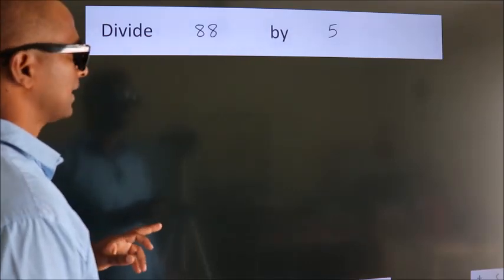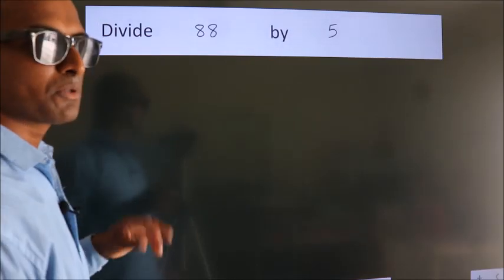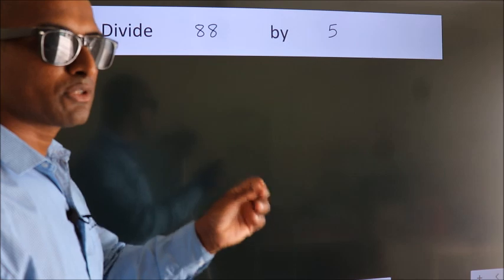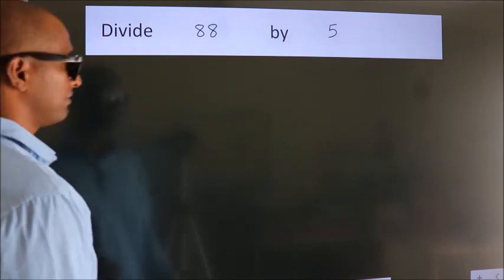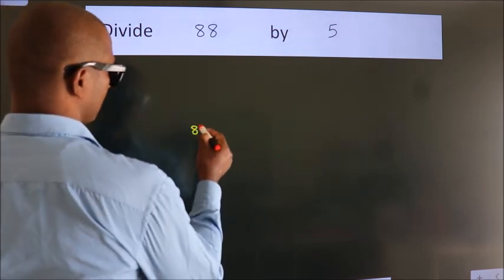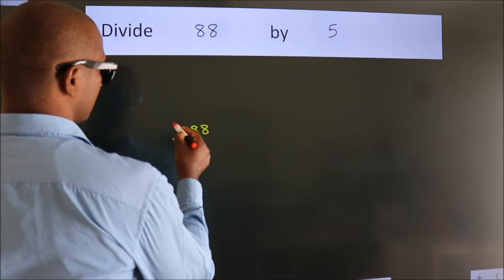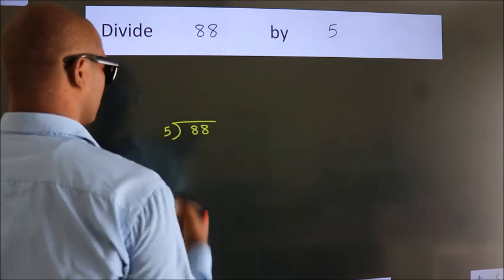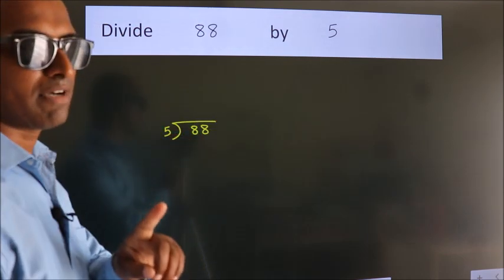Divide 88 by 5. To do this division, we should frame it in this way: 88 here, 5 here. This is step 1.